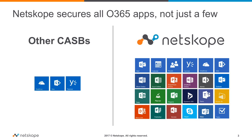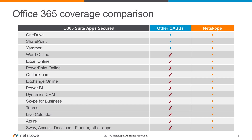In the case of Office 365, Netscope enables you to secure all apps in the Office 365 suite. Other CASBs are limited to supporting only two to three apps such as OneDrive and SharePoint. In fact, Netscope is able to provide granular visibility and control for dozens of apps within the Office 365 suite. Other CASB solutions don't even come close.